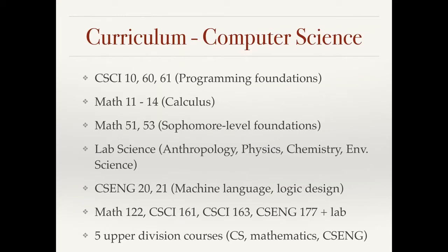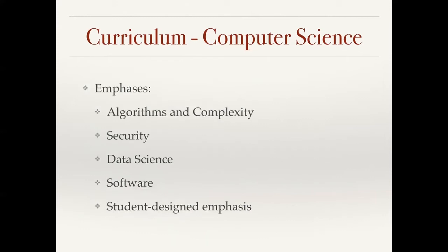Math 122 is probability, theory of algorithms, automata theory, a class in the engineering program with the lab, and then five other upper division courses in computer science, mathematics, or computer science and engineering. We have several emphases within computer science, and this is required for a student. We have one in algorithms and complexity, security, data science, software, and then a student-designed emphasis.